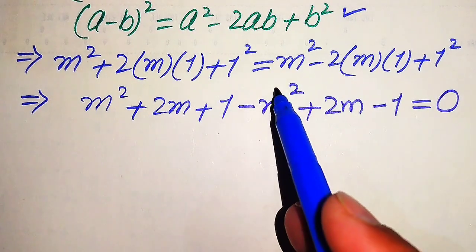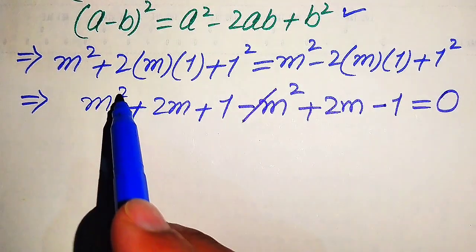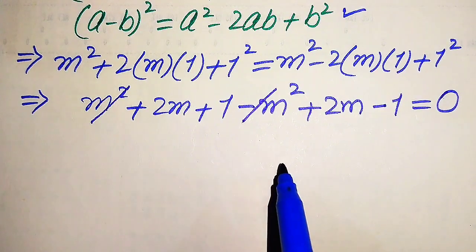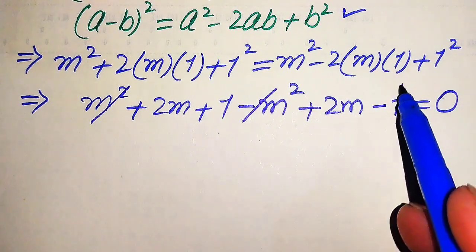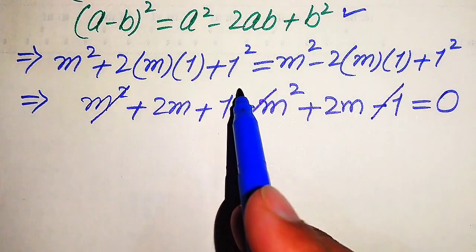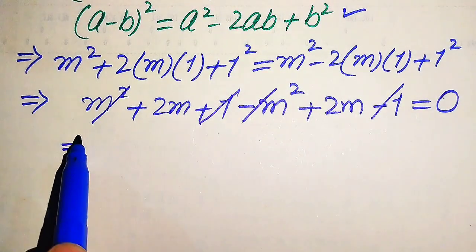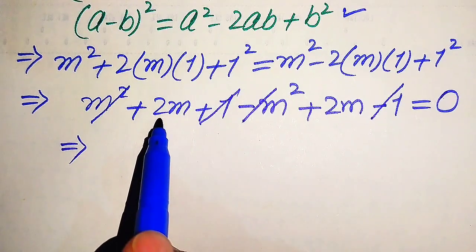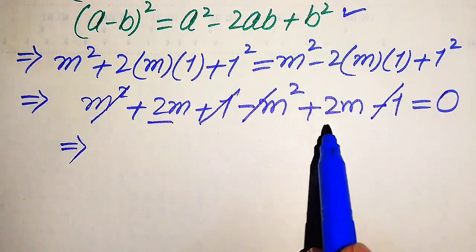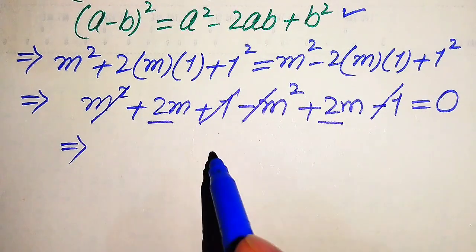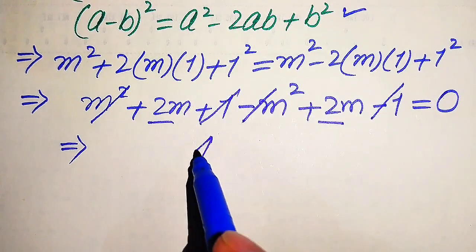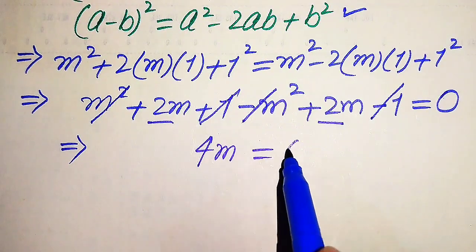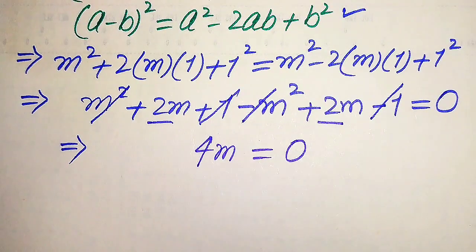Now we see that +m² and −m² cancel out, and −1 and −1 also cancel. We are left with 2m + 2m = 0, so 4m = 0.